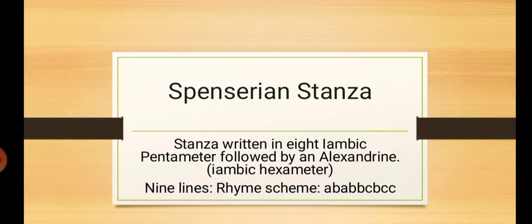The stanza will be of nine lines each. First eight lines will be in iambic pentameter, just like the iambic pentameter we were using in heroic couplet. And the last line will be in iambic hexameter, one meter more. And that is why that particular line which is written in iambic hexameter is also called an alexandrine, that is the name given to the iambic hexameter line, the ninth line of the Spenserian stanza. The rhyme scheme is ABABBCBCC. This is the fixed rhyme scheme of a Spenserian stanza where you have nine lines each in every stanza.